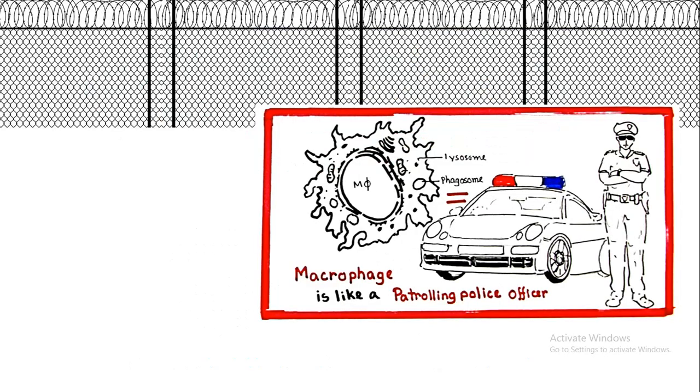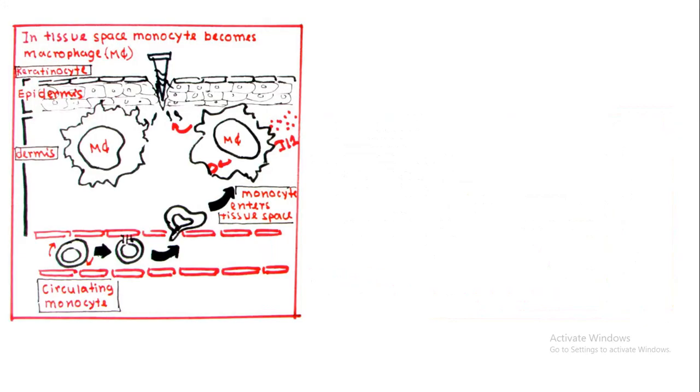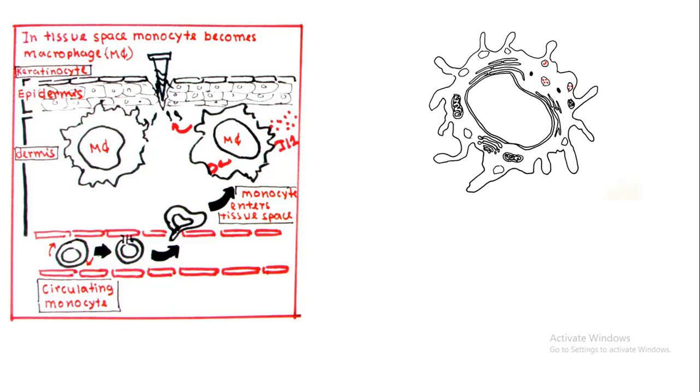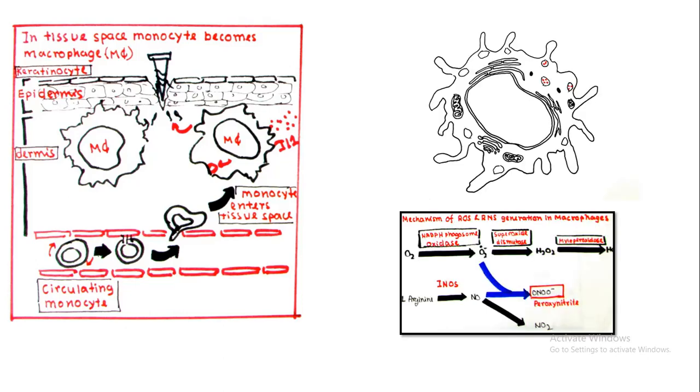Whenever a pathogen is entering our body—like here, a nail is pricking our skin and with the rusty nail there are pathogens entering—the macrophages, always patrolling down the skin, can recognize the pathogen. Macrophages can recognize and kill the pathogen. One way they kill the pathogen is by using reactive oxygen species. Another way is they engulf the pathogen and kill it by lysozymes.